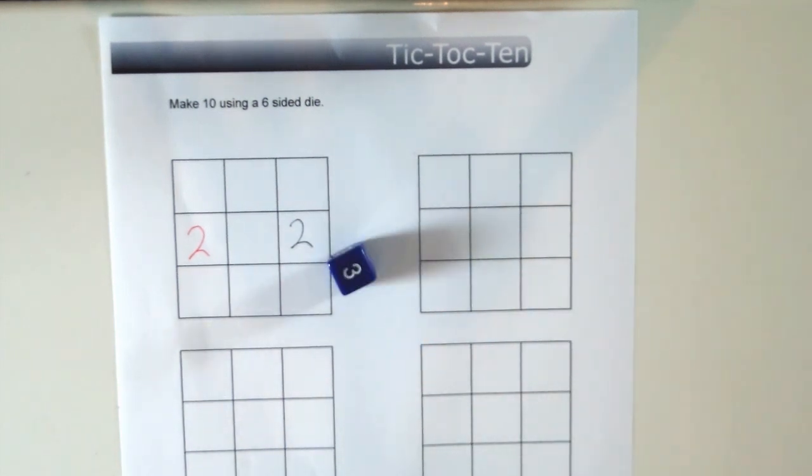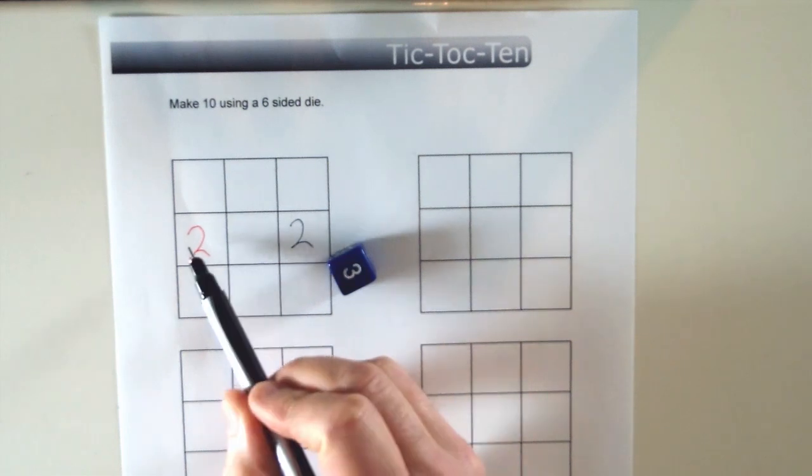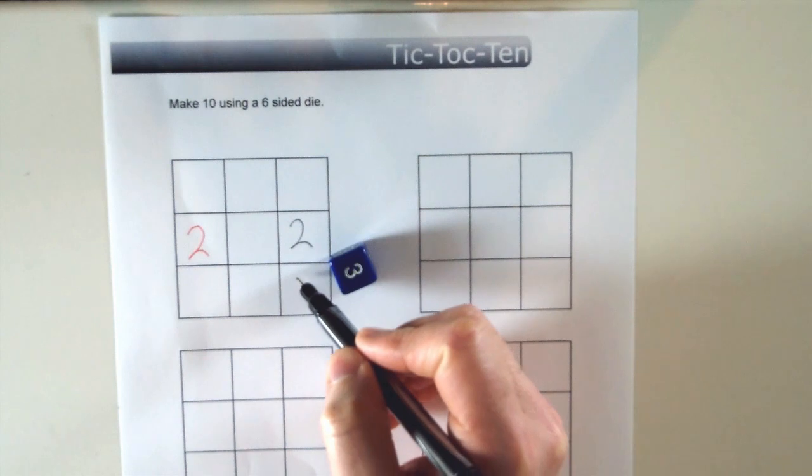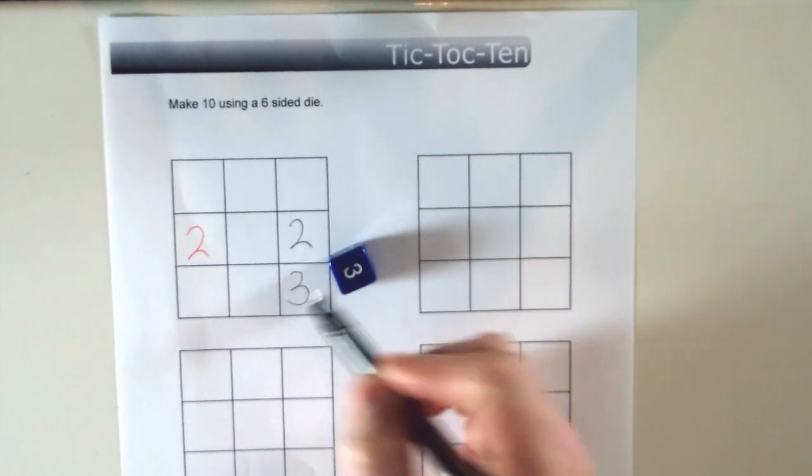Player 1 rolls a 3. They don't want to put it there because then that cancels out that 3 in a row. They won't be able to make 10. So they're going to put the 3 down here.